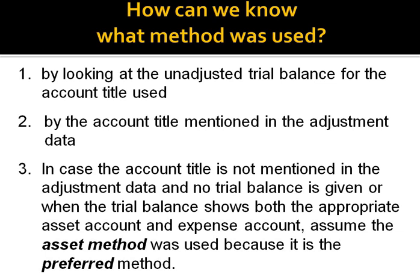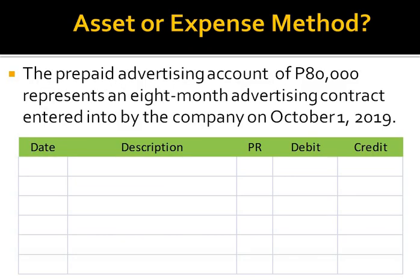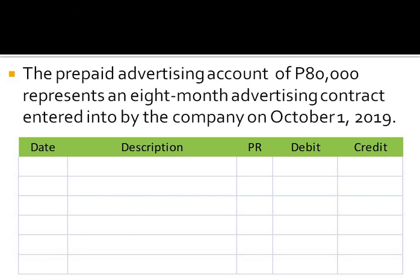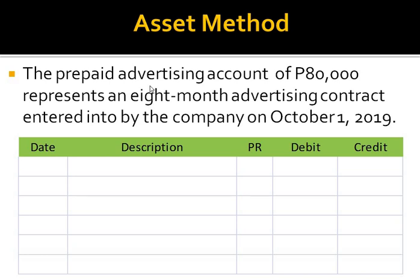Now, apply what you learned here in this problem. Determine whether asset method or expense method was used. The prepaid advertising account of P80,000 represents an 8-month advertising contract entered into by the company on October 1, 2019. What method was used? Asset method, because it says 'the prepaid advertising account.' Prepaid advertising is an asset. Therefore, the asset method was used in recording the advance payment.